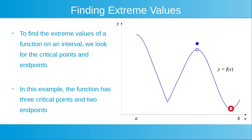The third critical point is now shown highlighted in red. At this point, the derivative of the function is equal to zero. This critical point is an absolute minimum value. On the open interval, now highlighted with a red line, this critical point is also a local minimum value.